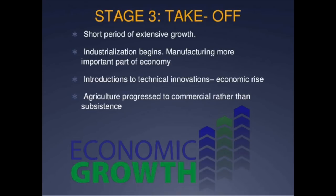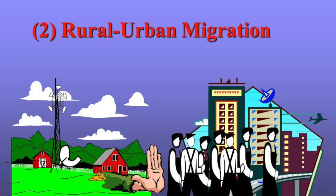The third stage of Rostow's model is called takeoff. This is where we start seeing industrialization hit a country and their economy is booming. A lot of workers are going to start leaving the agricultural rural countryside, moving to the cities looking for industrial jobs that paid them a lot more. Because they were making more money, they had extra money to spend, which also helped that part of the economy. America in the late 1800s going into the 1900s would be in this stage. Today we'd compare it to where China is at with their economy going through a boom.